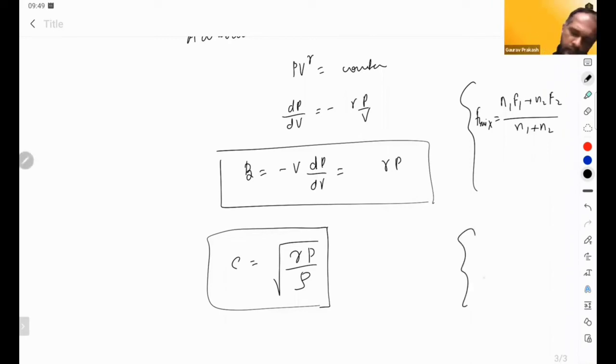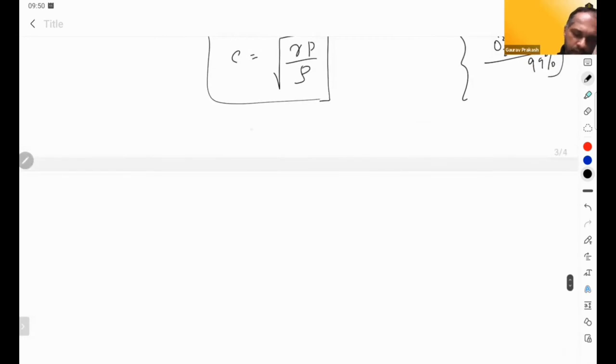So basically nitrogen is 78%, oxygen is 21%, so I can approximately take the gas to be diatomic. Degree of freedom is 5, gamma is 7 by 5. Got it? Then C came out to be around 332 meters per second, which corresponded to the experimental value.